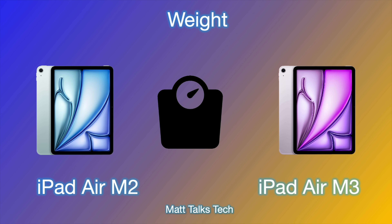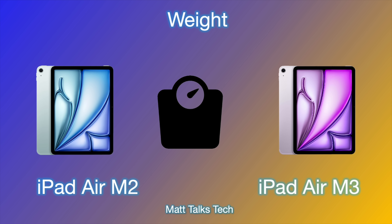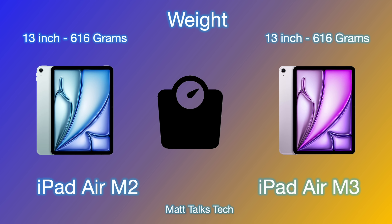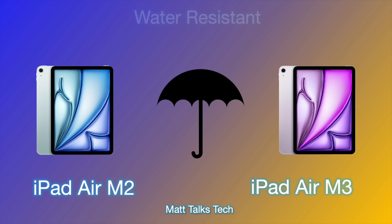For weight, there isn't really any difference. The 11 inch models weigh 460 grams whether M2 or M3. The 13 inch models are 616 grams for both. If you go for the 5G cellular option it will weigh about one gram more — 617 grams for the 13 inch and 461 grams for the 11 inch.